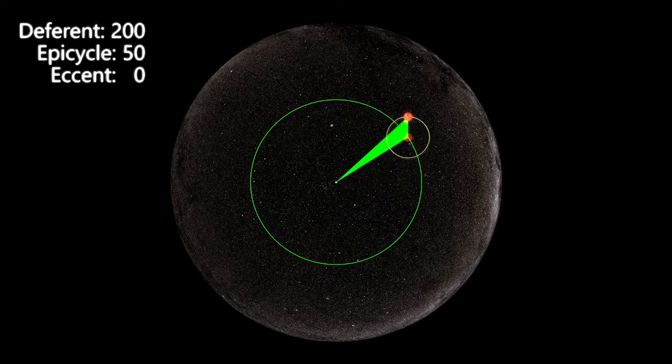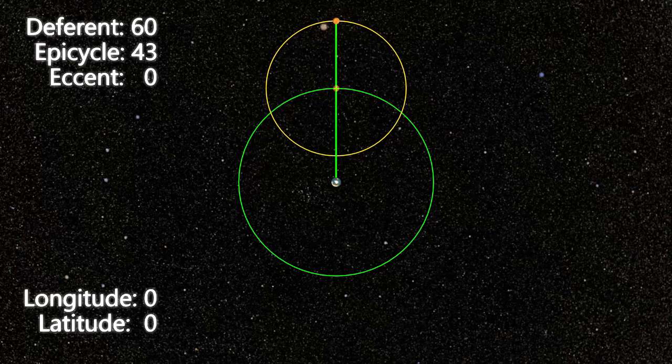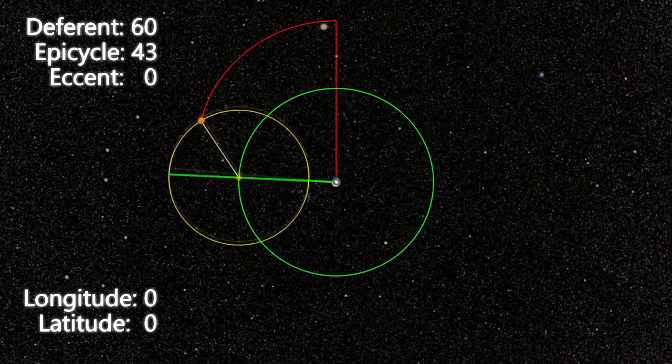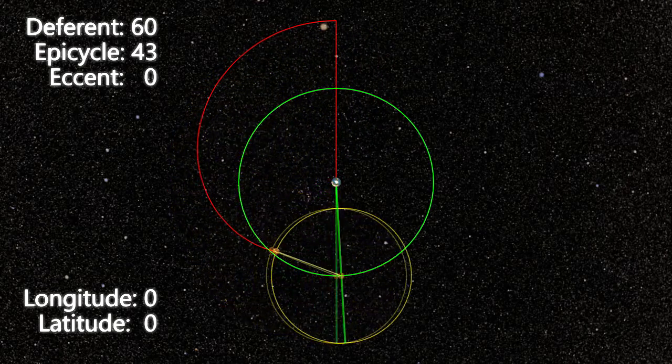For inner planets, the planet still travels round the epicycle the same direction as the epicycle is carried round the deferent, but now the planet travels round the epicycle at a different speed. In the case of Venus, the planet makes five circuits round its epicycle, while the epicycle makes eight circuits round the Earth.